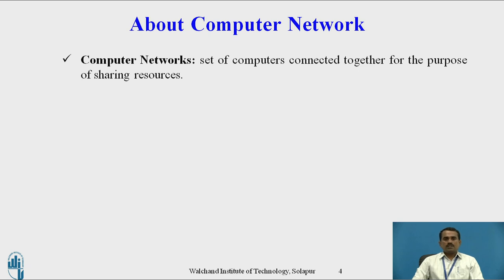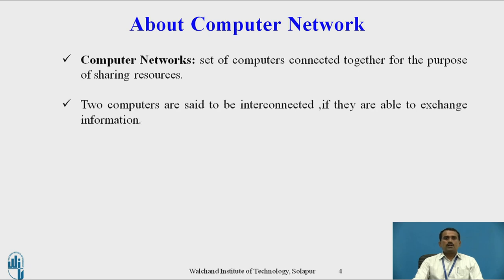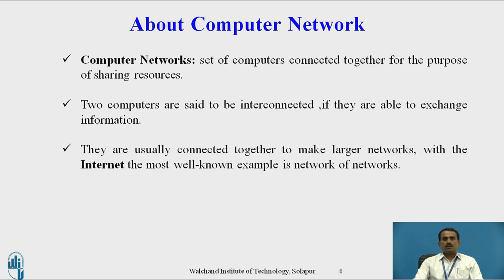About Computer Network: A Computer Network is a set of computers connected together for the purpose of sharing resources. The Computer Network concept can be used in different places — like in a company, by individuals, and in social media — for sharing resources. Two computers are said to be connected if and only if they are able to exchange information, which we call Communication. They are usually connected together to make larger networks, with the internet being the most well-known example — a network of networks.